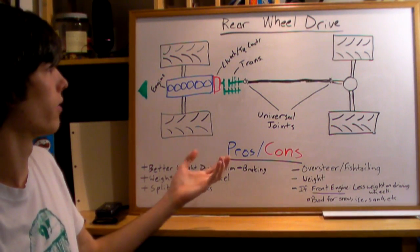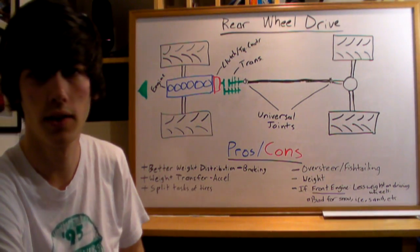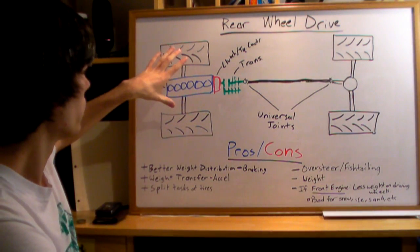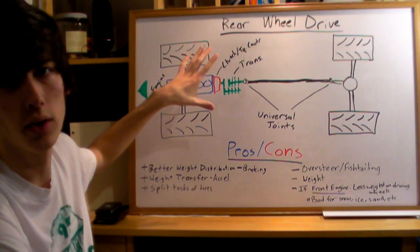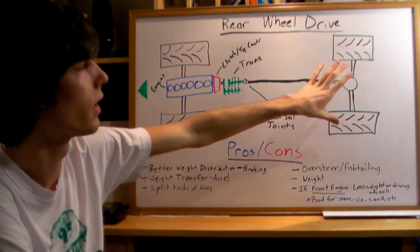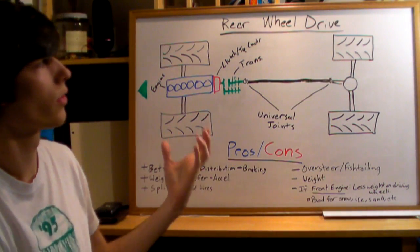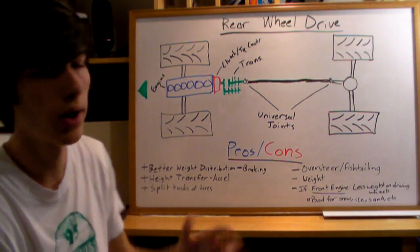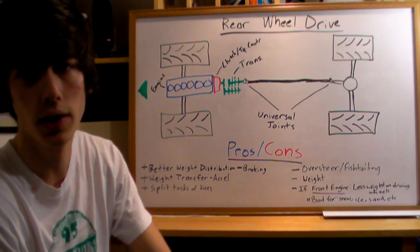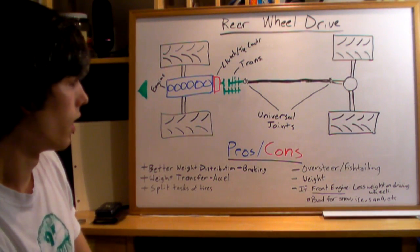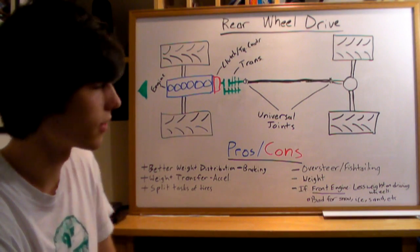Another big advantage is that it splits the tasks of the tires, which is much better for handling. You've got the front steering and doing most of the braking, and the rear accelerating and doing some braking. This also helps with tire wear - it'll be much more even in a rear wheel drive car than a front wheel drive car, as long as you're not doing burnouts.